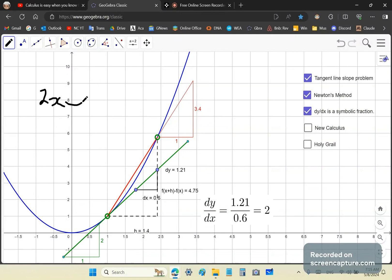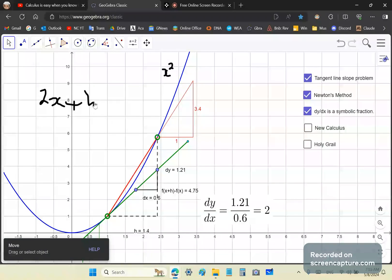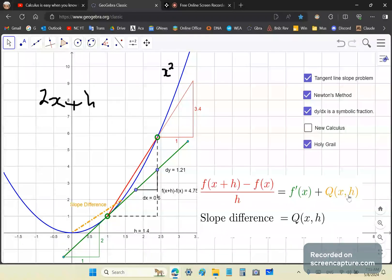The term 2x, when you get the term 2x + h after you simplify the finite difference quotient for x², which is this curve here,